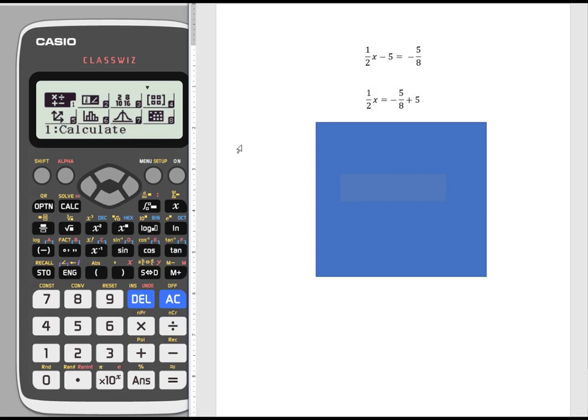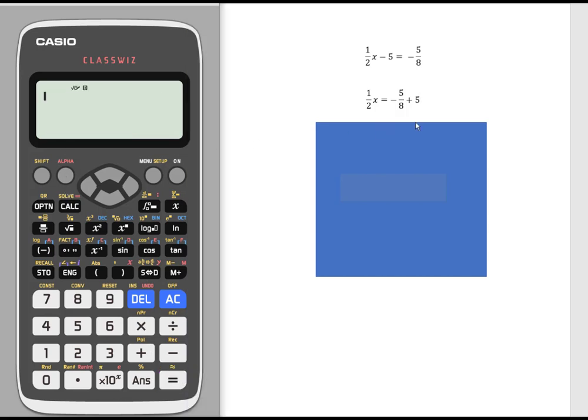Now let's use the calculator to help us get to the next step. I'm going to go into the calculate menu. I'm going to hit equal to get into it, and now I'm simply going to do this calculation using the fraction template. I can hit the template and I'm going to enter my negative five, then use my scroll bar here to get down to the denominator position, scroll out of the fraction, and now add my five.